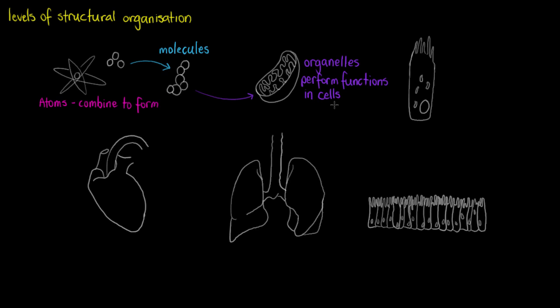Moving on from this we have a complete cell. Cells can be involved in many different things: communication, protection, movement, structural integrity. Here I've just drawn a ciliated columnar epithelial cell and it's going to be involved in protection.